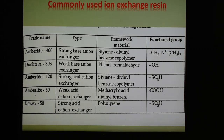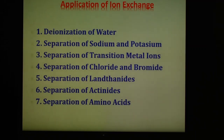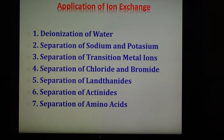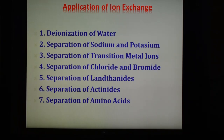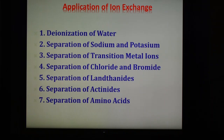Commonly used ion exchange resins are shown in a table with their trade names, types, framework material, and functional groups. Depending upon the functional group, there is an exchange of ions between the resin and the solution. The first application is the deionization of water, which is carried out by passing natural water through two columns. The first column is an acidic cation exchanger in hydrogen form, which replaces all cations with H+. The second column is a basic anion exchanger in hydroxide form, which replaces all anions with OH⁻. These H+ and OH⁻ combine to form pure water.